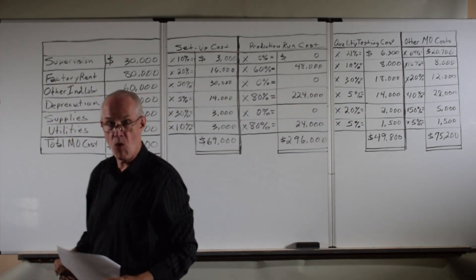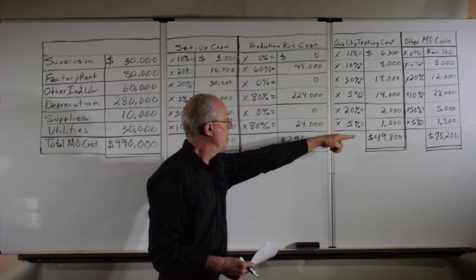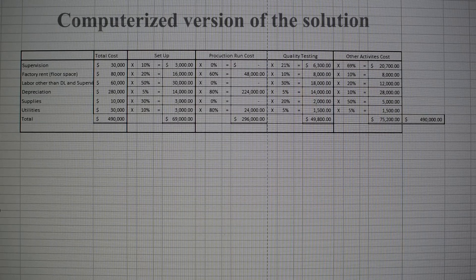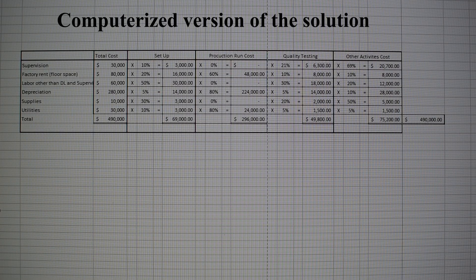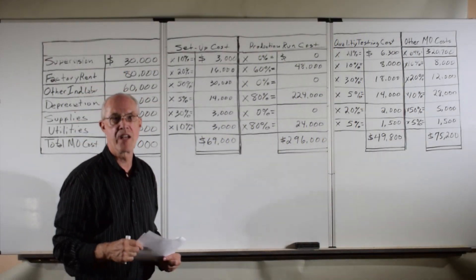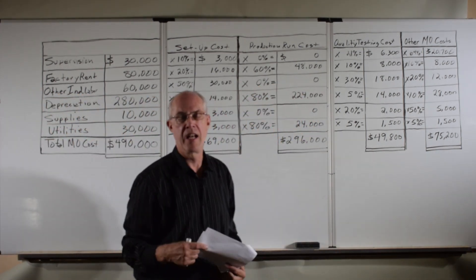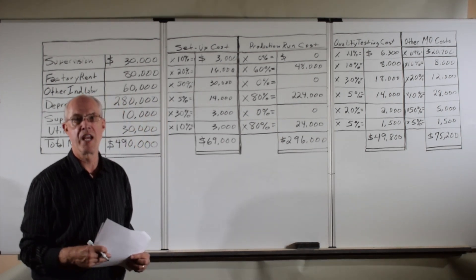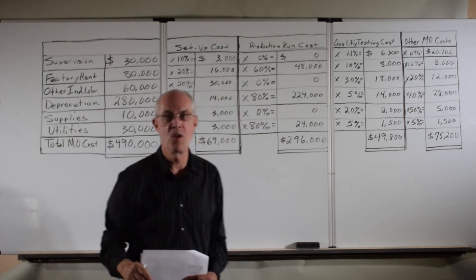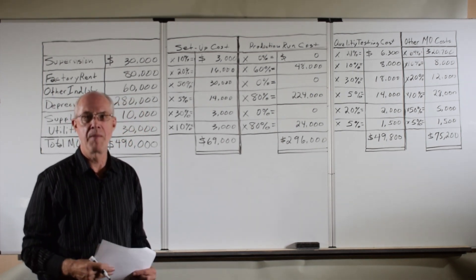So there we have it. We've done stage one. We've determined the cost of each of these smaller cost pools. The next thing we've got to do is allocate these costs—the 69,000, the 296,000, the 49,800, and the 75,000—to our products. That is going to be stage two and that's the next video. So we're going to end this video at this point with stage one. The next video we will show you how to do the stage two allocation, allocating the cost of these activities to production. I appreciate you watching the video. If it's helpful for you, please give it a thumbs up. This is Mike from Miami saying bye for now.